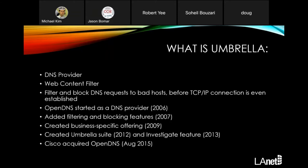So what is Umbrella? Umbrella is the newer name for what was once called OpenDNS. OpenDNS started off as a DNS provider, then moved into security and web content filtering. It allows you to filter and block DNS requests to bad or malicious hosts before the TCP/IP connection is even established. It started as a DNS provider in 2006, added filtering and blocking in 2007, added business offerings in 2009, created the Umbrella suite in 2012, added the Umbrella Investigate feature in 2013, and was acquired by Cisco in August 2015.